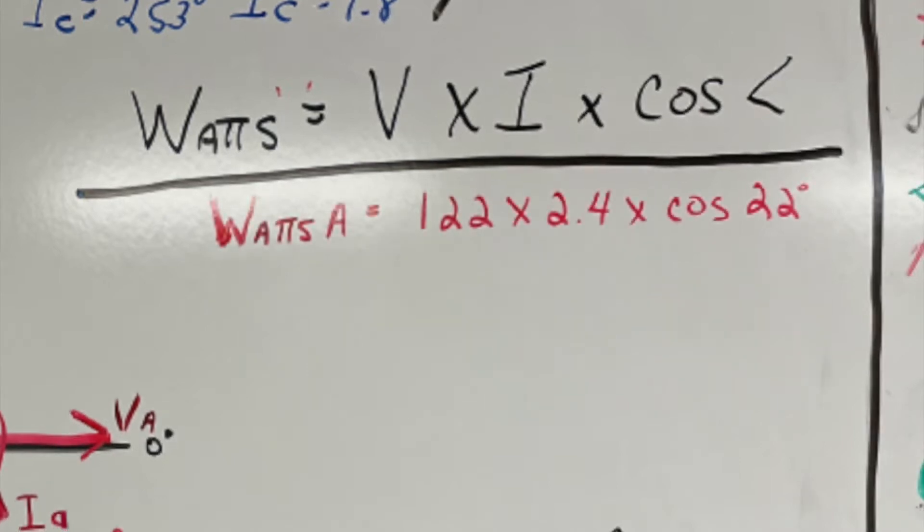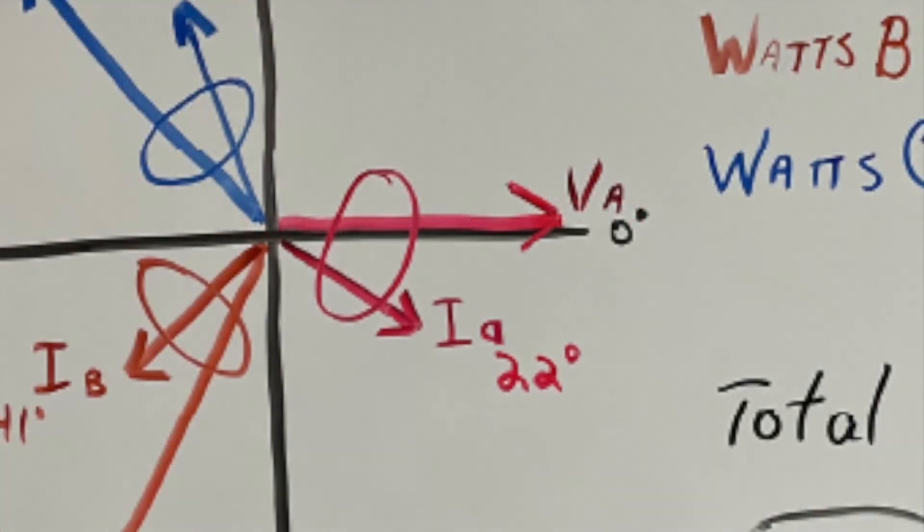We're going to go to phase A where we have the given values of 122 volts times the 2.4 amps times the cosine of 22 degrees where current A lags voltage A by 22 degrees.